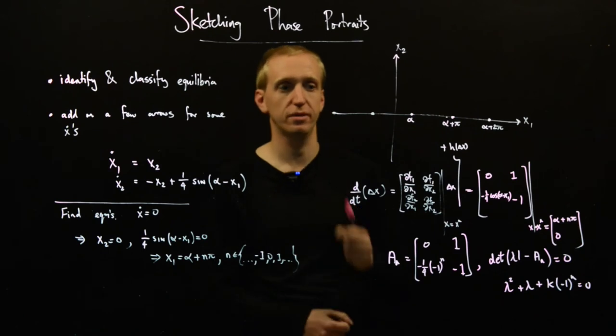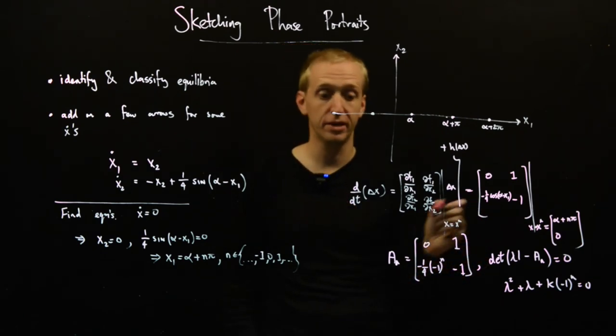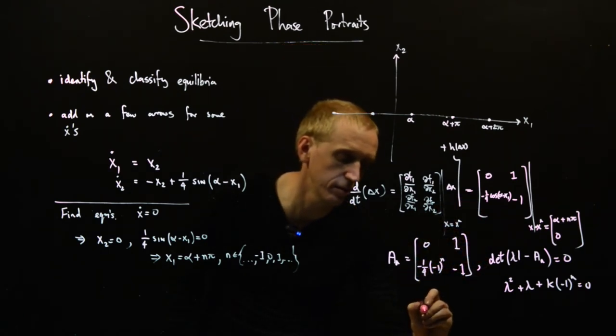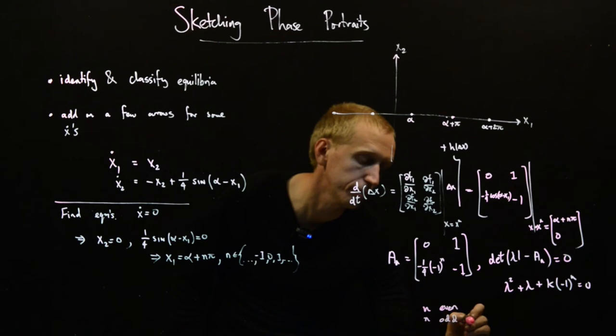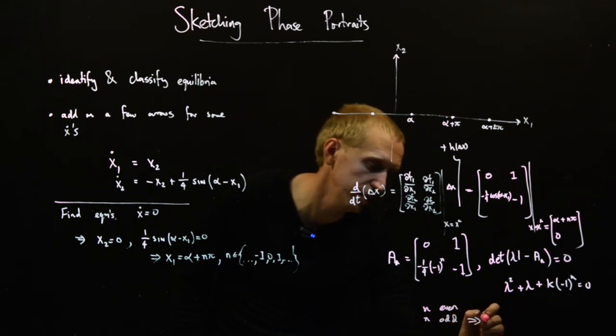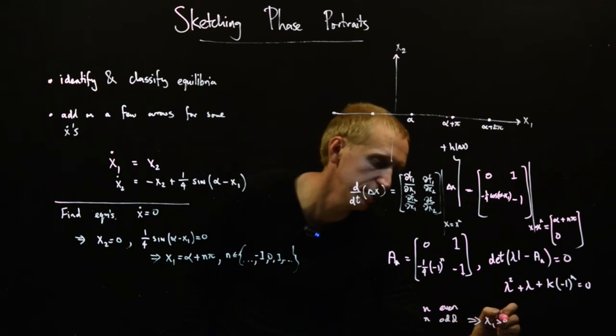And then the pattern just flip-flops around for n. So we get that n odd implies lambda 1 bigger than zero.